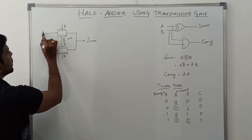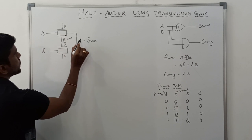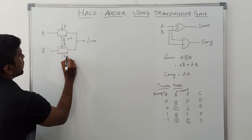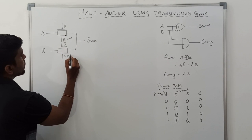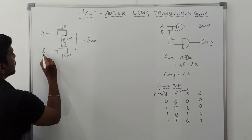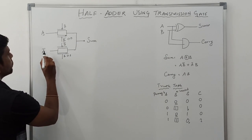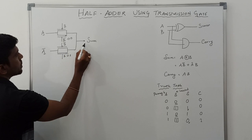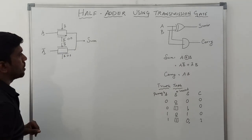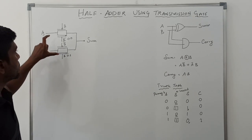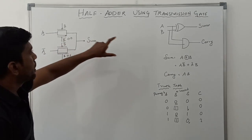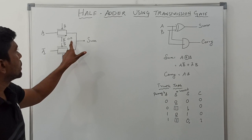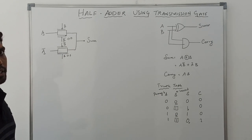When B equals 0, input A is transferred to sum. When B equals 1, the complement of A is transferred to sum. So this is the XOR gate equivalent — the transmission gate structure equivalent of an XOR gate.